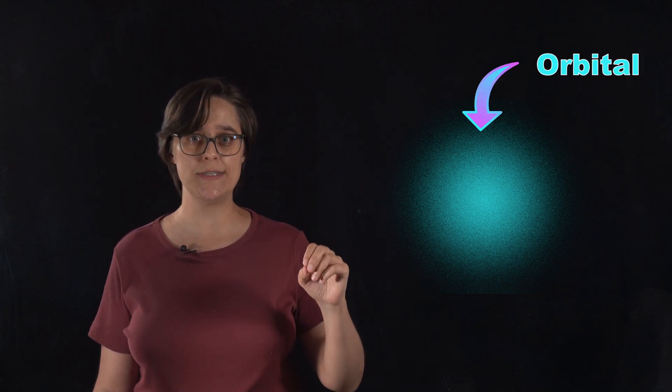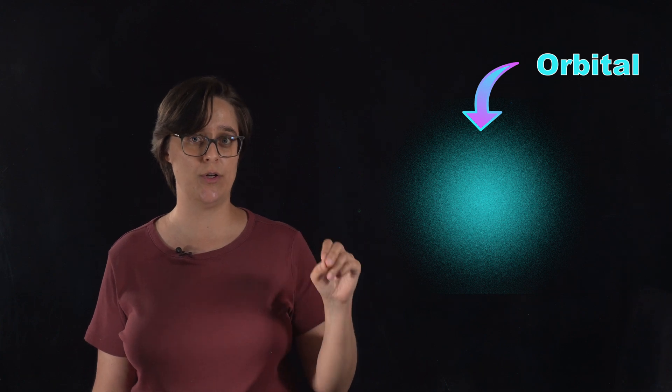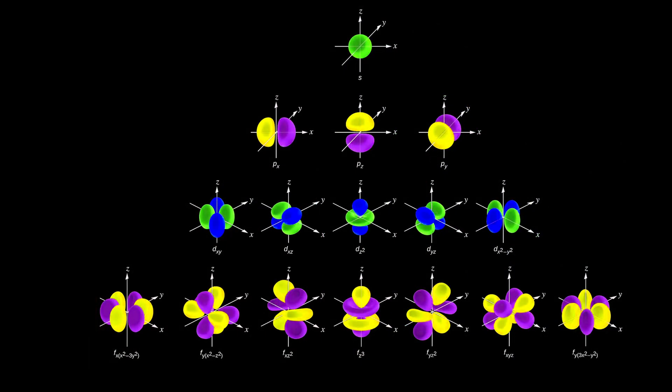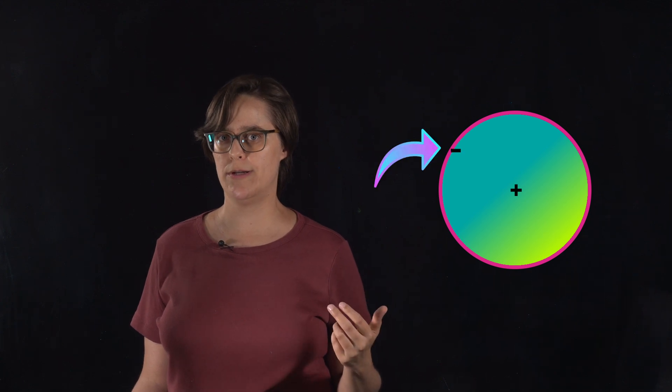So Schrödinger introduced the concept of orbitals, which are regions with high probability of an electron to be found. He replaced Bohr's circular orbits with these complex 3D shapes. We've named them S, P, D, and F orbitals. One of the questions that Niels Bohr was trying to answer was, if opposite charges attract, why do electrons in an atom not just crash into the nucleus? Schrödinger's explanation is that the electrons' wave functions are quantized, where Bohr said that the electrons' energy levels are quantized.